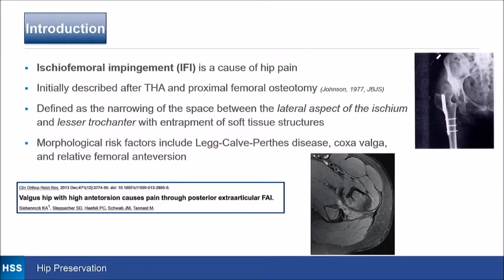Ischial femoral impingement is a cause of hip pain. It was initially described with total hip arthroplasty and proximal femoral osteotomy in 1977. It's defined as a narrowing of the space between the lateral aspect of the ischium and the lesser trochanter with entrapment of the soft tissues. Morphologic risk factors, published by Klaus and the group here in 2013, are Legg-Calvé-Perthes, coxa valga, and relative femoral anteversion.